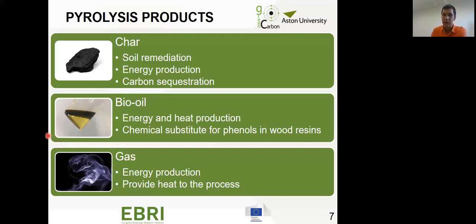Finally, we've got the gas. The gas is mostly used for energy production and it's really difficult to store. Most of the times we burn the gas to provide heat to the process because we're talking about high temperatures. Seven hundred degrees is the maximum limit, but we're talking about 300 to 700. Those temperatures need a source of energy.